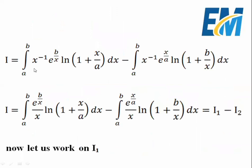Now we can write x^(-1) as 1/x, so this term can be written as e^(b/x) all over x. Similarly here we have e^(x/a) all over x. Denote by I1 the first integral and I2 the second, so i becomes I1 minus I2.